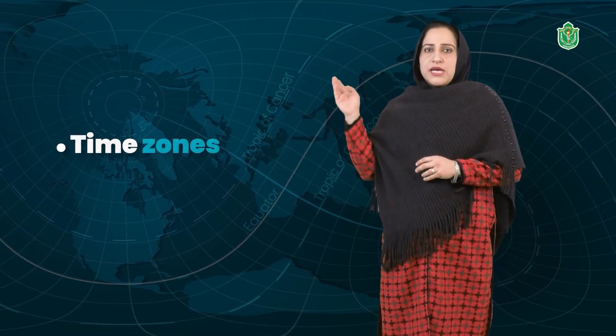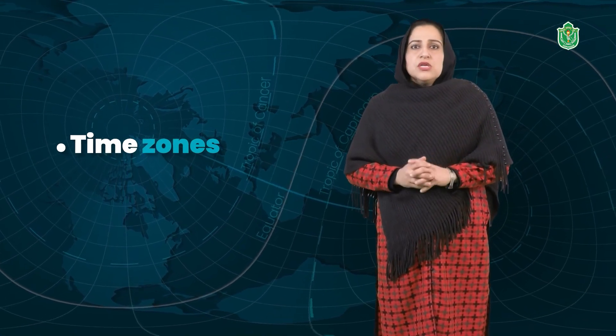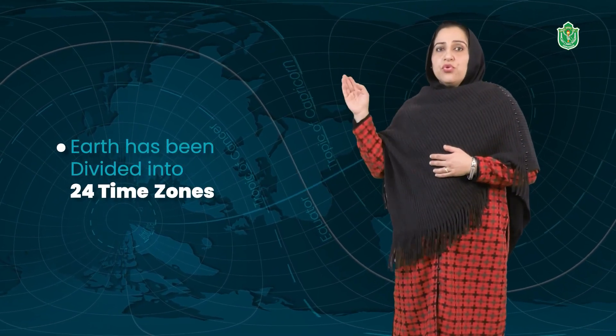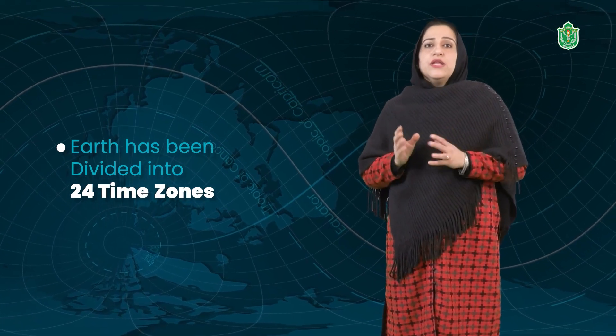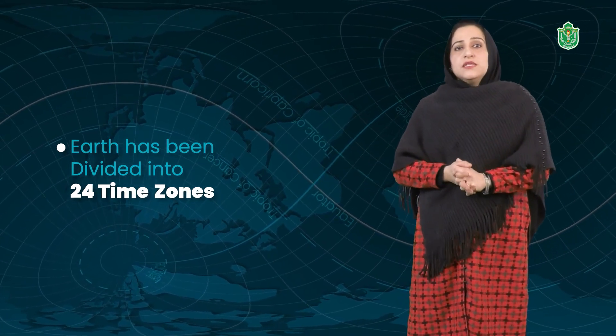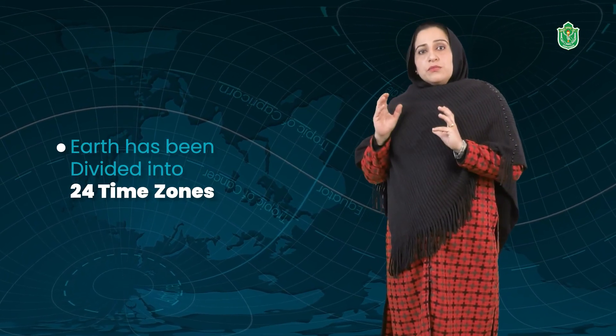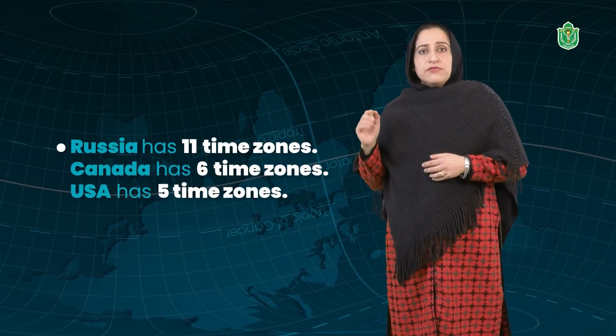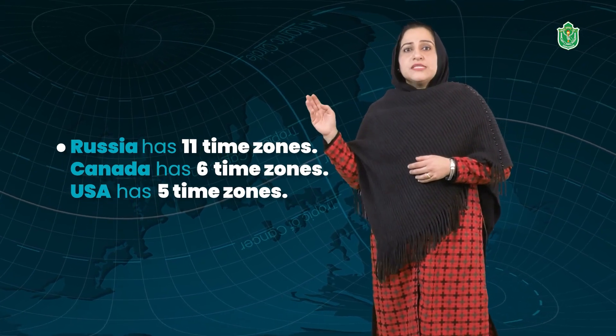Now we will learn about time zones. The time is decided by a longitude, and certain vast countries have many longitudes passing through them, so it is not possible to have one standard time. The earth has been divided into 24 time zones, each giving a duration of one hour as the earth completes rotation in 24 hours. The main longitude passing through each time zone gives the standard time of that meridian. Vast countries like Russia have 11 time zones, Canada has six time zones, and the USA has five time zones.